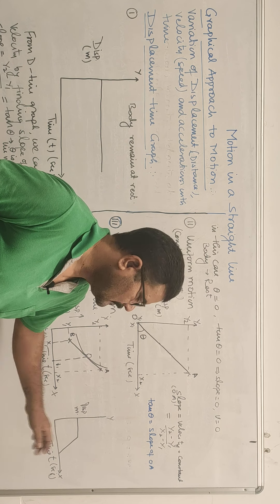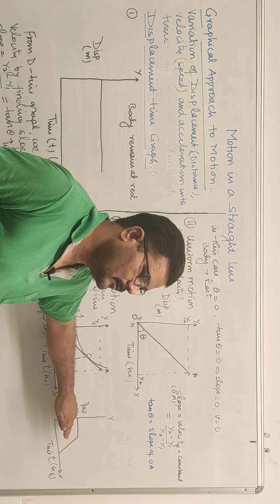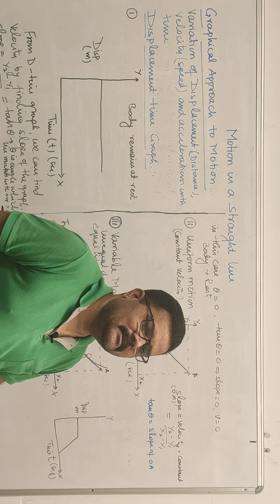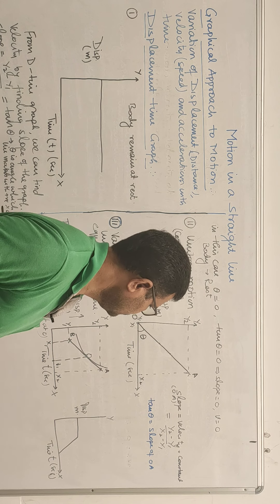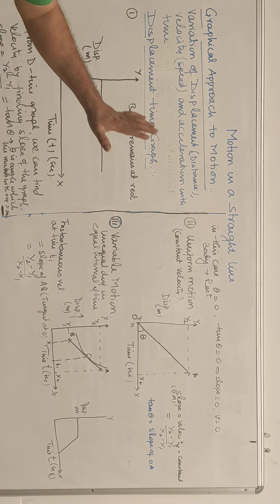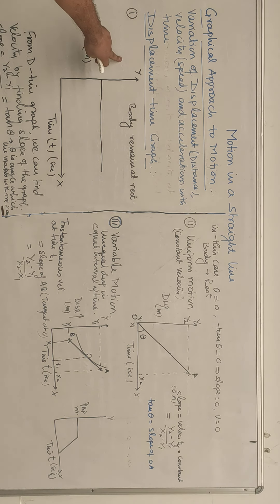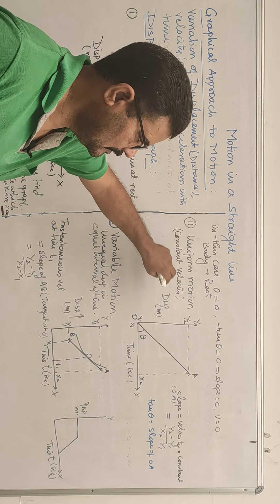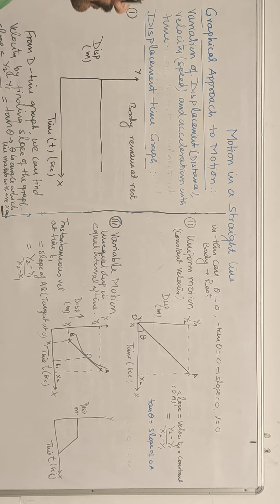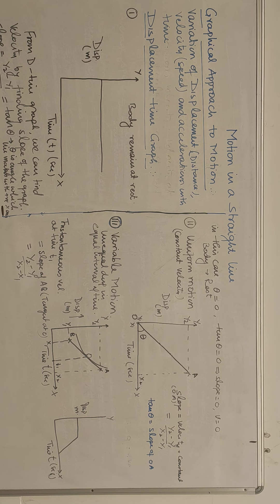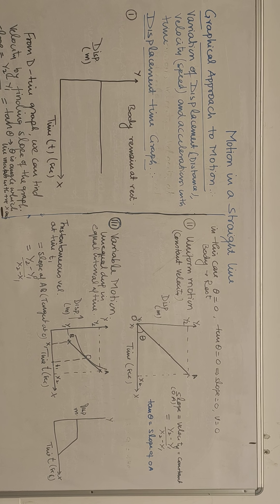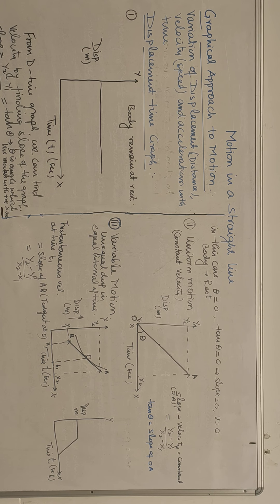This also illustrates variable motion where displacement remains constant for a time and then decreases. So this is all about the displacement-time graph: body at rest, uniform motion with constant velocity, and variable motion. The key conclusion is that from a displacement-time graph, you can find velocity by finding the slope of the graph.